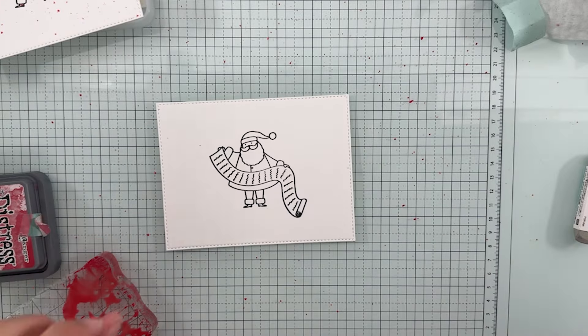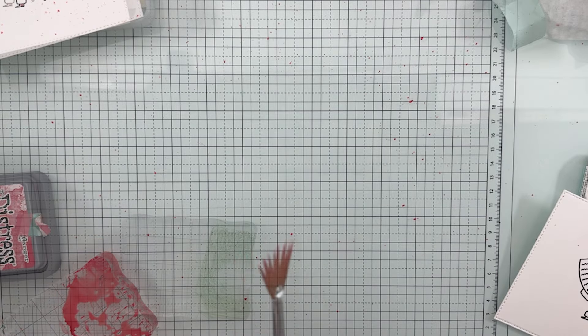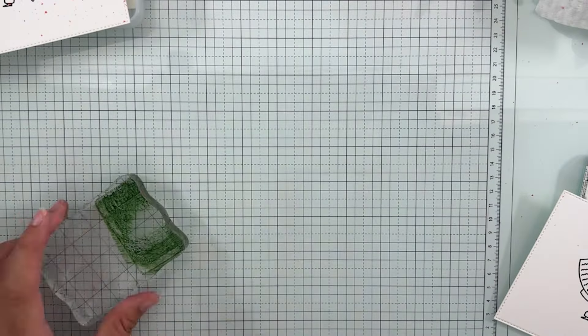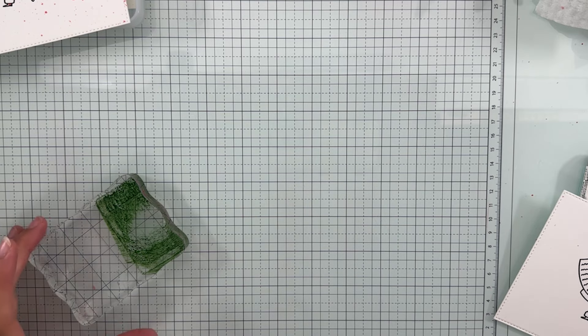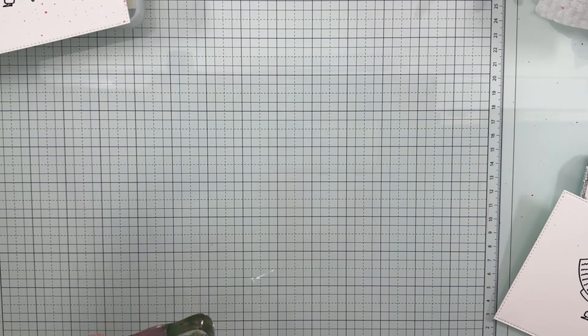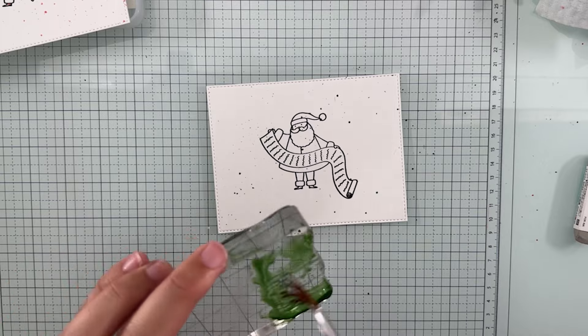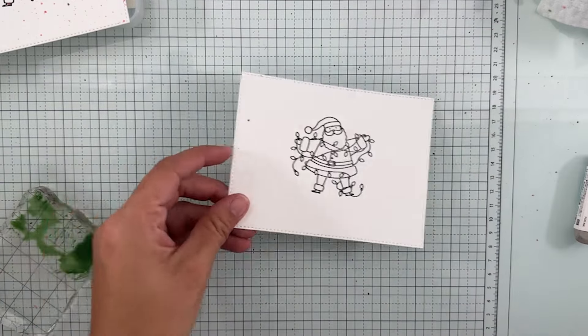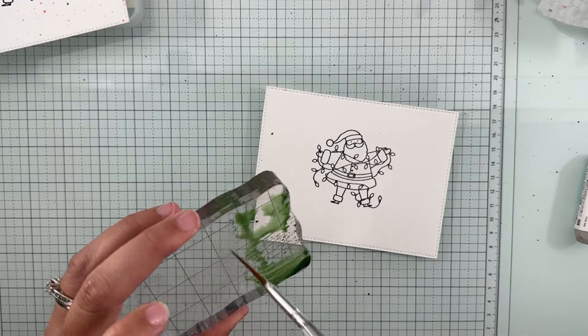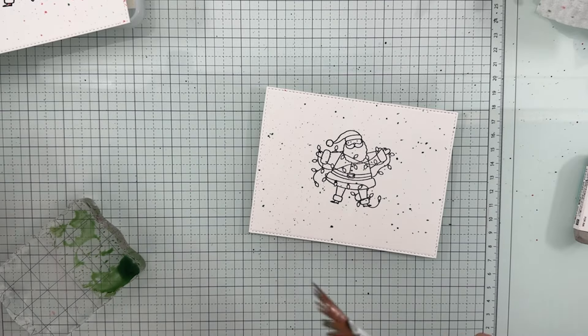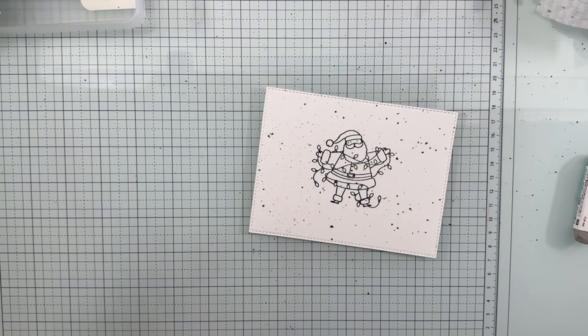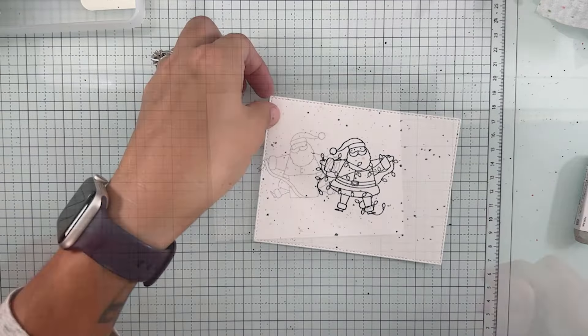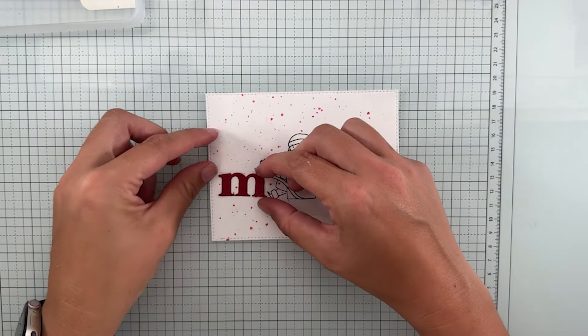So two red. I almost did all red on accident. I almost forgot that I needed to switch to the green. I just used my Lumberjack Red Distress Oxide and I think Pine Needles for the green, and just a flair brush is what I'm using to get splatter everywhere. I probably should have used my splatter box, but we're not doing that.